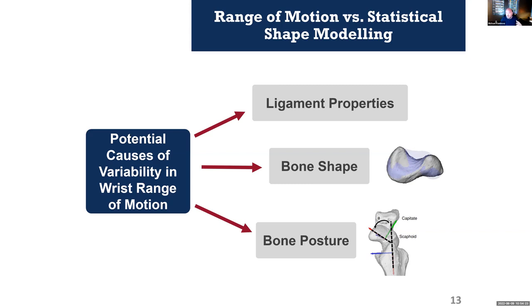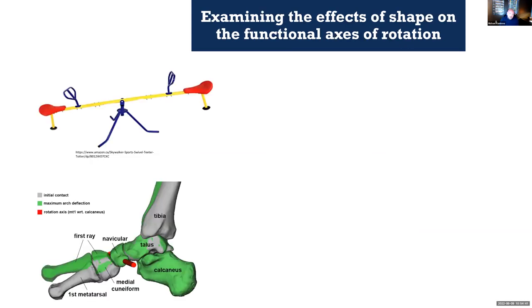Some limitations of this correlative approach: we really don't know if the shapes are changing at the same time as ligament properties are changing, or whether the joint shapes also control what kind of postures the joints can achieve in a neutral wrist position. We started this study thinking it was all ligament laxity, then we did the shape analysis and realized the joints are also changing shape and contributing to range of motion. Without doing a more sophisticated musculoskeletal model where we actually model the ligaments and contacts, we really can't untangle what's causing what here.